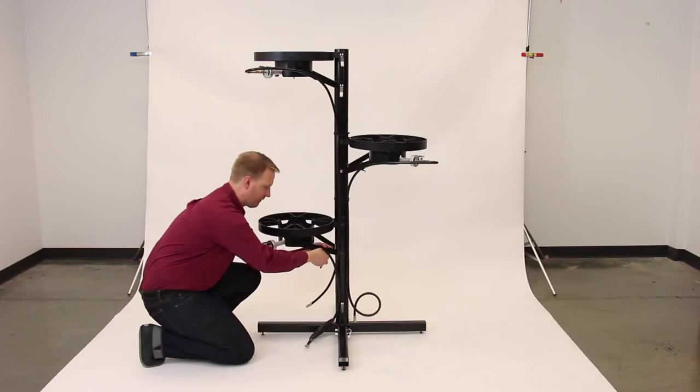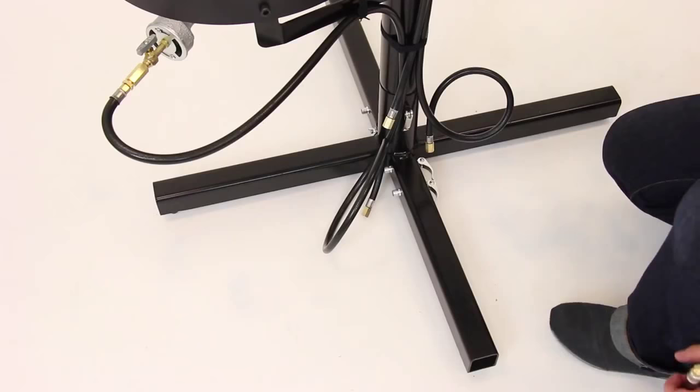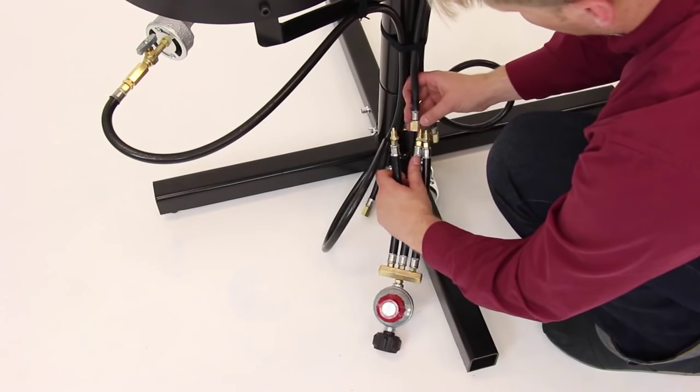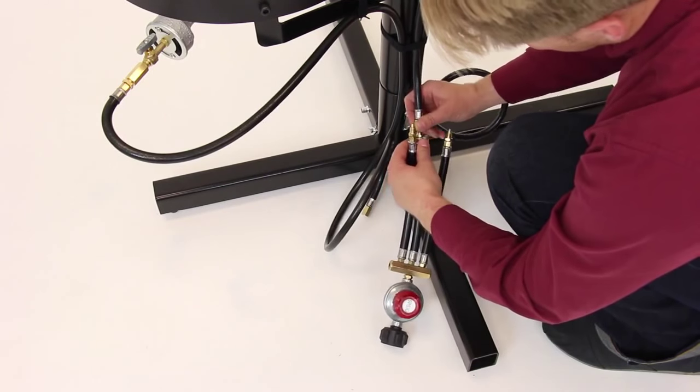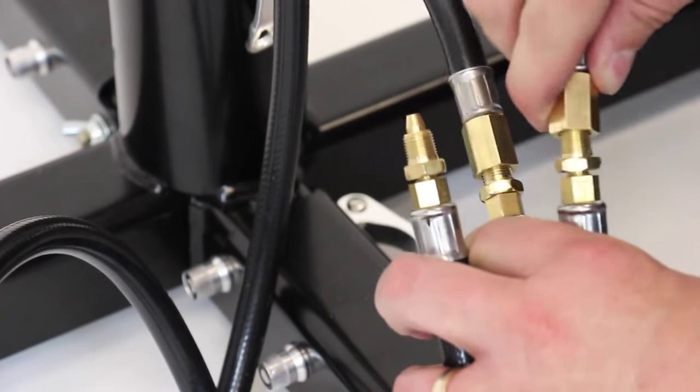Now you can repeat this step for the other two burners. Finally, thread each propane hose into the manifold and lightly tighten all of the gas connections with a wrench.